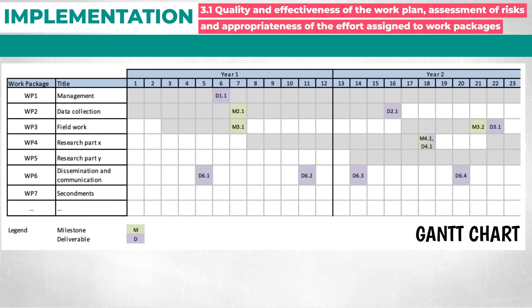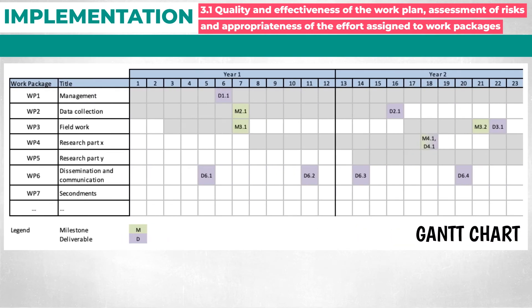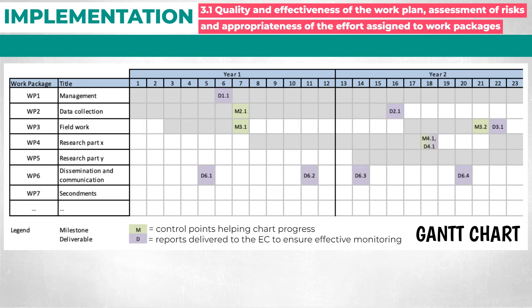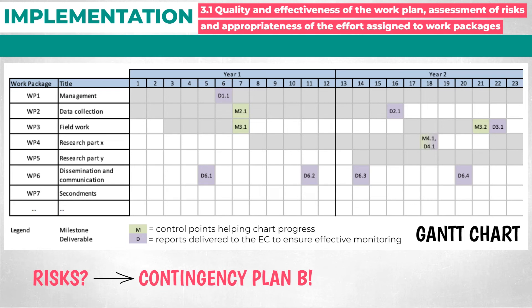Prepare your Gantt chart, where you indicate the timing of work packages and their major components, such as deliverables, milestones, secondments, and non-academic placements. Identify possible research-related but also non-research risks to successful implementation, and your concrete Plan B — the so-called contingency plan — consisting of mitigation measures.